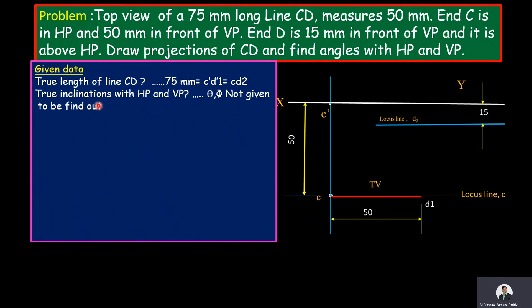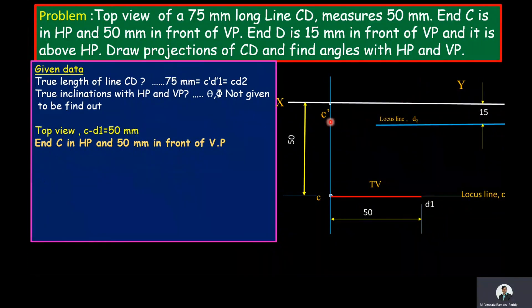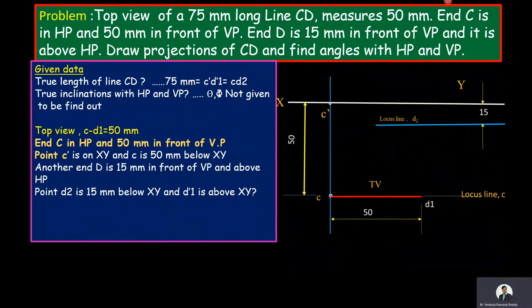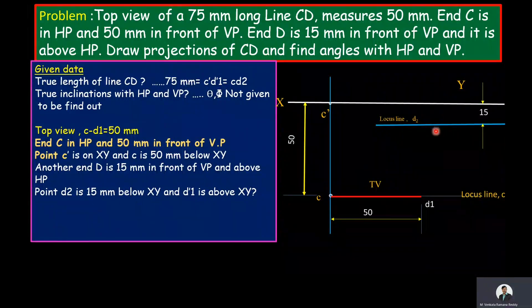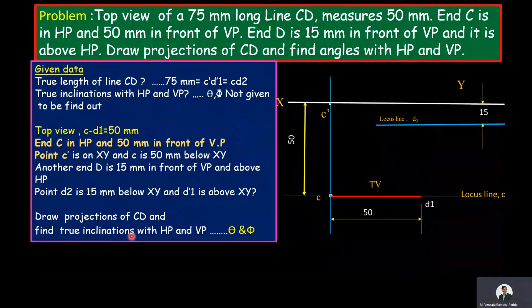The true inclinations with HP is theta and with VP is phi — these values are not given and must be found. The top view length CD1 is 50 mm. End C is in HP and 50 mm in front of VP, so its front view C-dash is on the XY line and its top view C is 50 mm below the XY line. End D is 15 mm in front of VP and above HP, so its top view D2 is 15 mm below the XY line and its front view D1-dash is above the XY line. We need to draw projections of CD and find theta and phi.